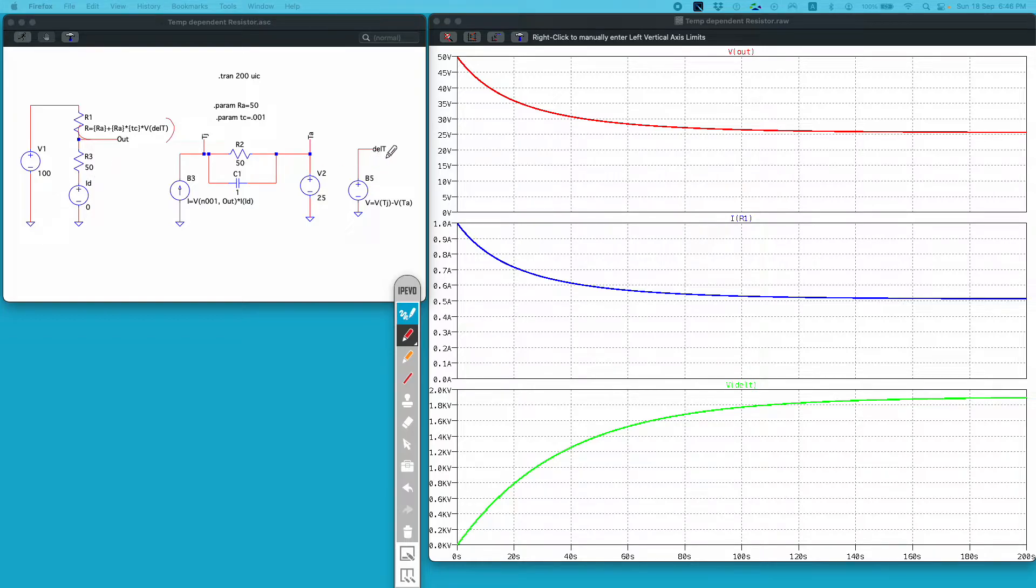The idea is that as delta T increases, value of this R1 should increase given that this TC is positive. If TC is negative, this value of R should decrease.